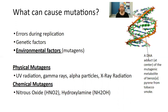Physical mutagens would be UV radiation, gamma rays, alpha particles, or X-ray radiation. Chemical mutagens could be things like nitrous oxide, hydroxylamine — anything that you are exposed to that could cause that mutation to occur.